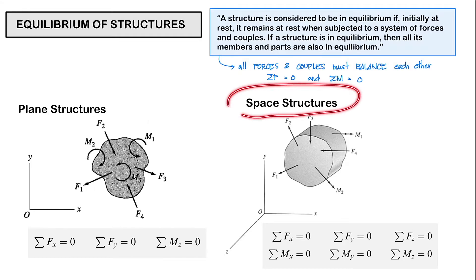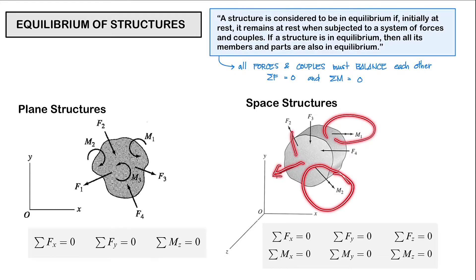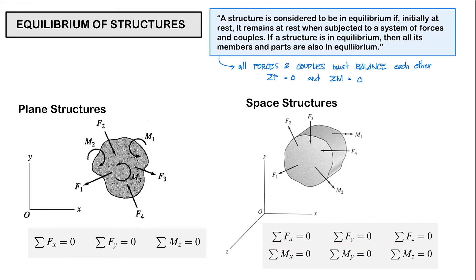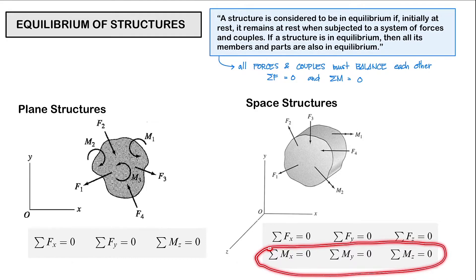Now what about our space structures? Space structures exist along three axes — the x, y, z coordinate system — and are subjected to different forces and different couples. For our space structure to be considered in equilibrium, it must satisfy the six equations of equilibrium. We have the summation of forces along the x-axis, the y-axis, and the z-axis, which must all be equal to zero, stating that there are no resultant forces acting on our structure. And when these six equations have been satisfied, we can say that our space structure is in equilibrium.